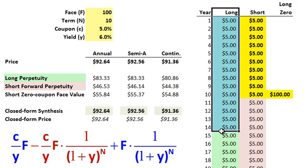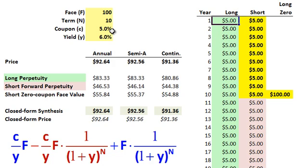So first, the one for each column here, the first is a long position in the perpetuity that pays the coupon. So notice here, the coupon in this bond is $5 per year. And so the first column here is perpetuity or infinite series of $5 coupons.